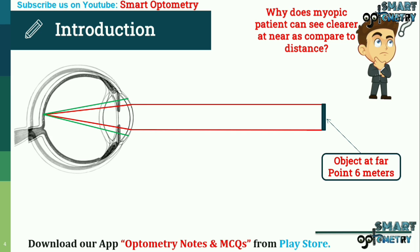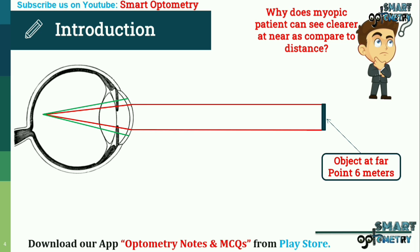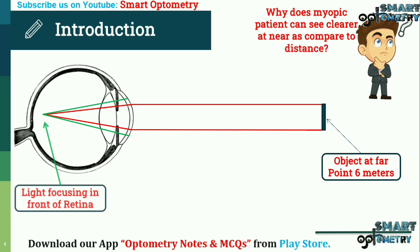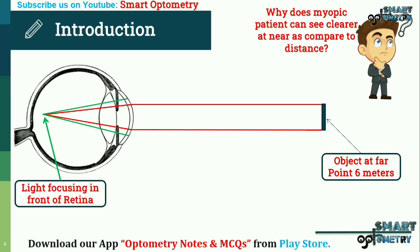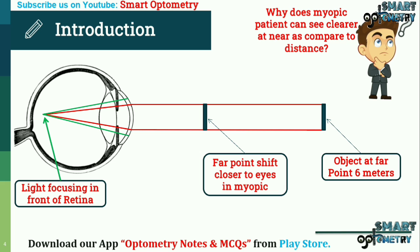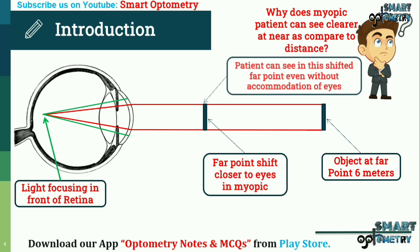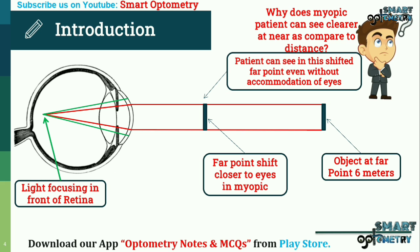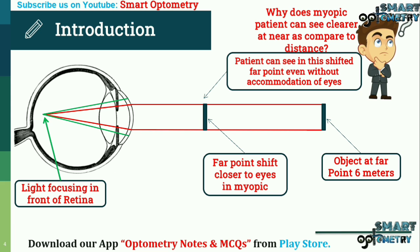In a myopic patient, the eyeball size is increased and the total power of the eye is also increased, due to which the farpoint shifts closer to the eyes.